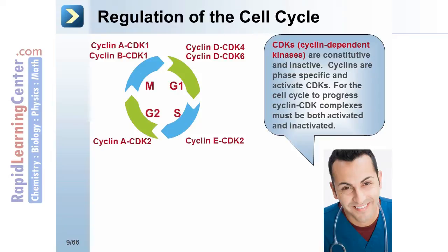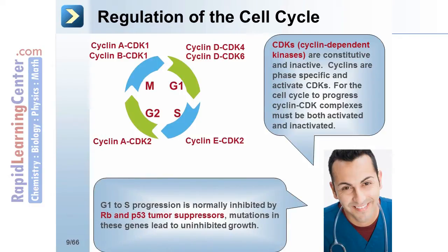For the cell cycle to progress, cyclin-CDK complexes must be both activated and inactivated. G1 to S progression is normally inhibited by RB and P53 tumor suppressors, and mutations in these genes lead to uninhibited cell growth.